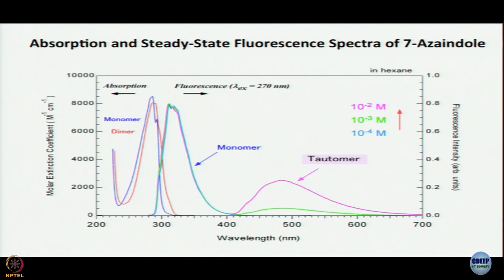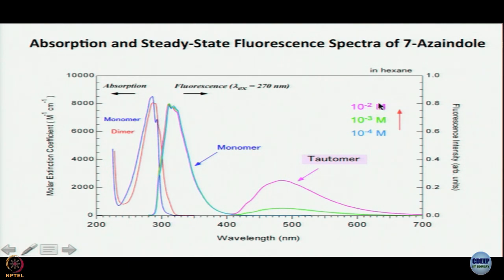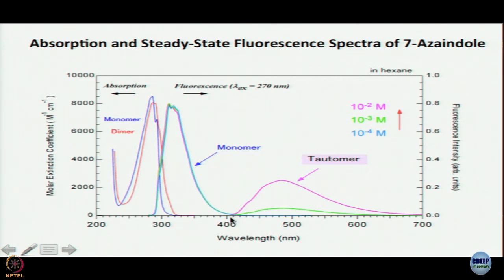7-azaindole dimer has been studied by people who are not spectroscopists also, because it is a DNA base pair model. So that biomimetic aspect is also there. For our purpose, what we need is: upon increasing concentration from 10⁻⁴ to 10⁻² molar, a small change in absorption is seen. But most significant is that this monomer emission goes down and tautomer emission becomes very prominent, between 400 to 700 nanometers, with emission maximum somewhere at 480 to 490 nanometers.